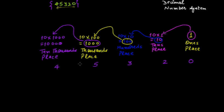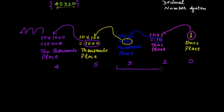In the decimal number system, we group the places together. After ten thousand, there will be lakh — the chain goes on. Each successive place has a value of ten multiplied by the value of the previous one. We group places together: ones, tens, and hundreds are grouped together; thousands and ten thousands are grouped together; then lakhs and ten lakhs are grouped together, and so on.